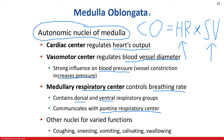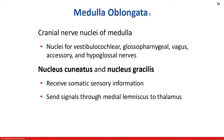The medulla oblongata controls many other functions: coughing, sneezing, vomiting, salivating, swallowing, and many digestive processes. In my opinion, the medulla oblongata is one of the most important parts of the brain. The medulla also houses the nuclei — the origins — of cranial nerves 8 (vestibulocochlear), 9 (glossopharyngeal), 10 (vagus), 11 (accessory), and 12 (hypoglossal).